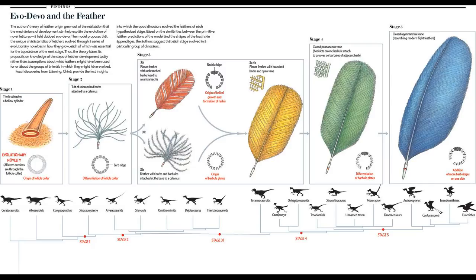The earliest protofeather was just a tubular structure called a collar. Later, the collar differentiated, producing barb ridges that grew unbranched keratin filaments. The filaments then fused at their base to form a central filament. This was followed by that central filament developing filaments along it. The fine filaments on modern feathers are called barbs. In a maniraptor dinosaur, a number of these barbs then fused on the anterior midline of the follicle to form the rachis, that structure that goes down the middle of a feather. Originally the barbs would have been single branches, but over time they developed their own branches, called barbules.